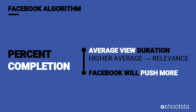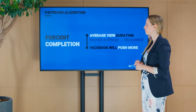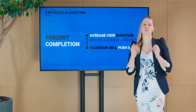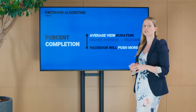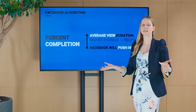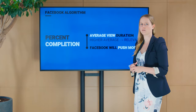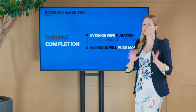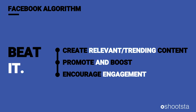Facebook uses a metric similar to YouTube's watch time — it looks at average view duration to figure out how relevant a story is, and if it is relevant, it will push it out to more users. Facebook wants to be the next big video platform and will reward you for doing video. How do you beat the Facebook algorithm? First: create relevant and trending content.